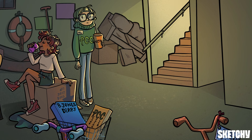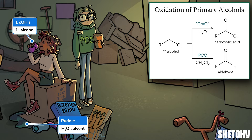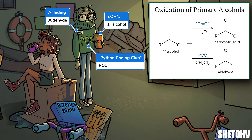Primary alcohols are more complicated — let's look at these two students to review the two possible paths. Each student is holding one drink to symbolize primary alcohols. If you add any of the normal chromium reagents to a primary alcohol, you're going to end up needing water as the solvent, which you can remember by this puddle. The water makes it possible for a primary alcohol to be oxidized twice, all the way to the carboxylic acid — symbolized by a cardboard box. In contrast, if you treat your primary alcohol with PCC as your chromium reagent, no water solvent is needed. The result of this water-free reaction is an aldehyde. Al here is sporting his Python Coding Club sweater to remind you of PCC, and he's hiding behind his shirt to remind you of aldehydes.